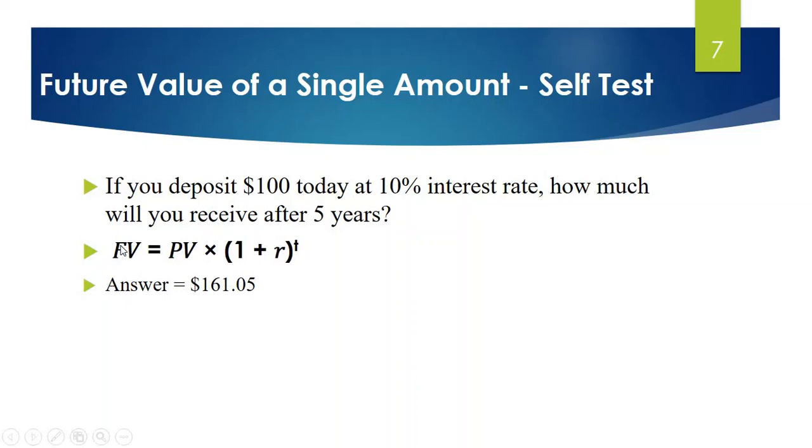So if you apply compound interest, your answer is $161.05. But if you apply simple interest, your answer will be $150. That's how compound interest is different from simple interest rate. You receive more money if you apply compound interest.